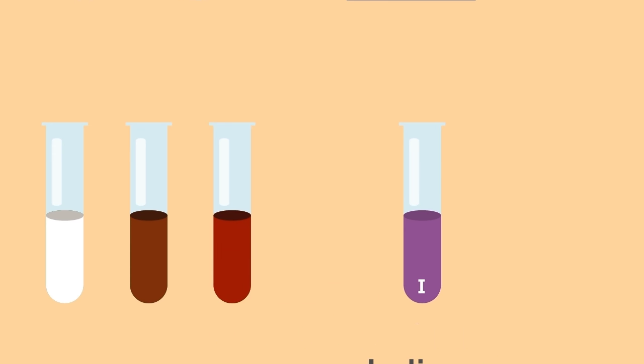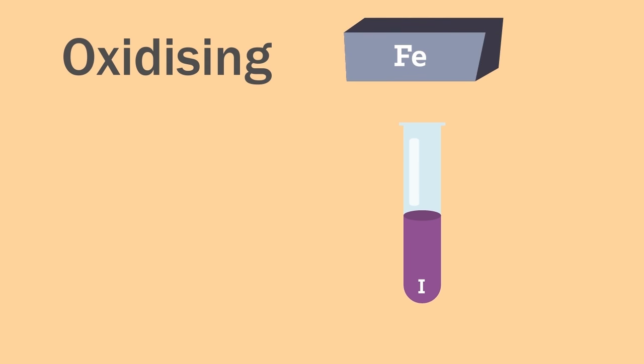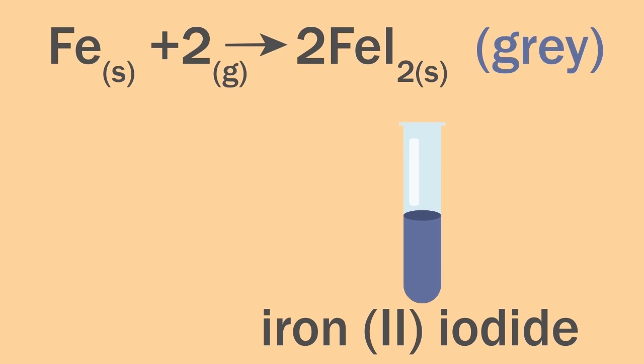The reaction with iodine is not so successful. This is because iron is very oxidizing and iodine is very reducing. They can be reacted directly but this produces iron two iodide. The reaction again is shown on the screen.